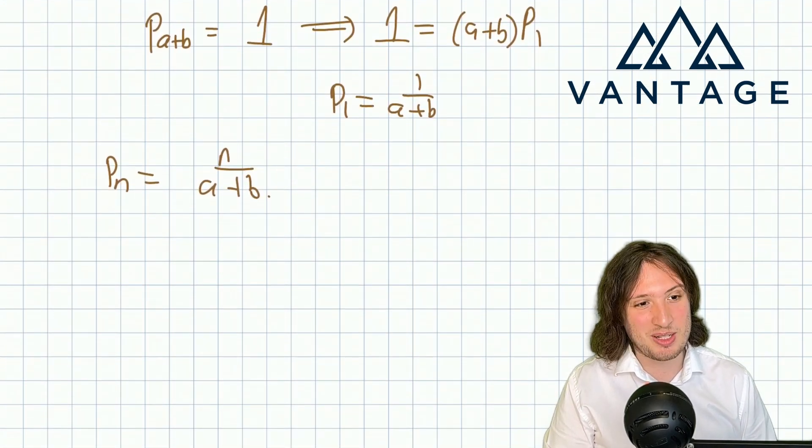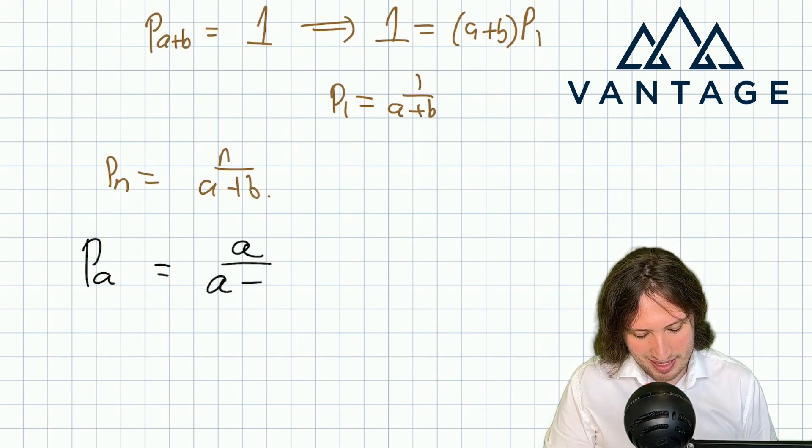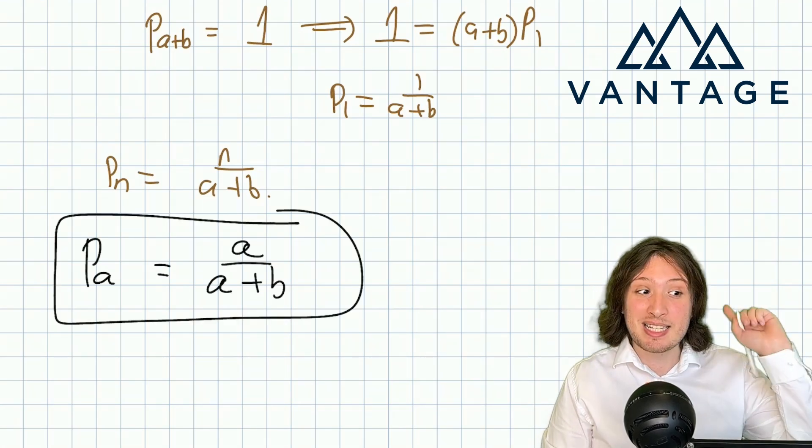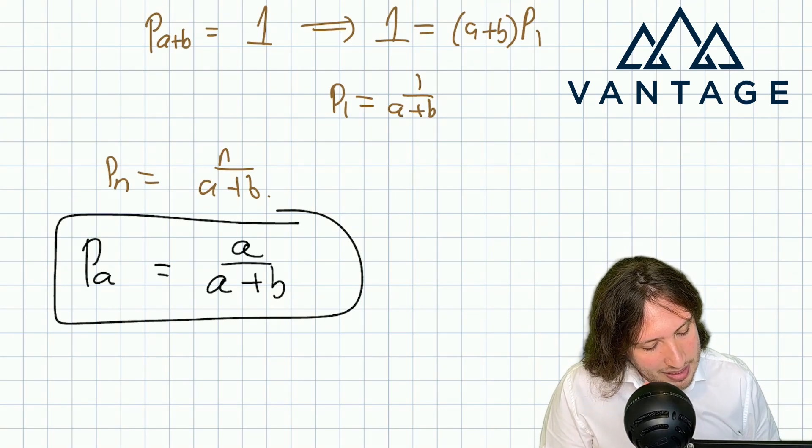But hang on a minute, what was it we wanted? We wanted P_a, the probability that she wins from the start, and that is a/(a+b), which is exactly what intuition suggested would be the answer.